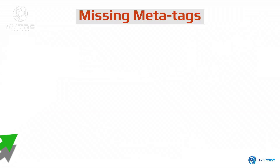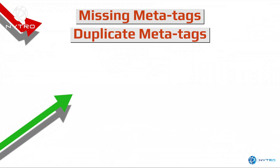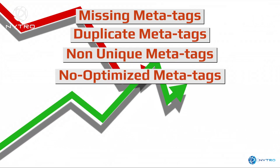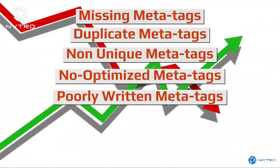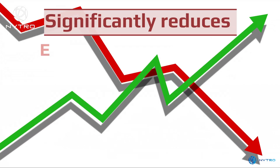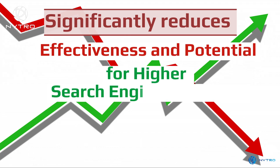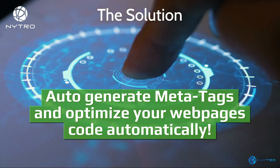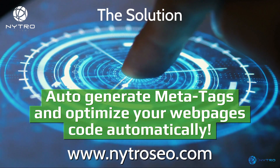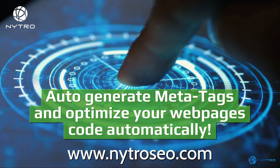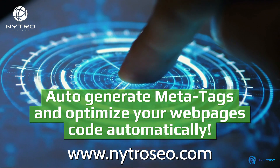Any missing, duplicate, non-unique, and non-optimized meta tags cause search engines to independently determine the content of your search snippet, which very often does not include your optimal and relevant keyword search terms for the specific page.